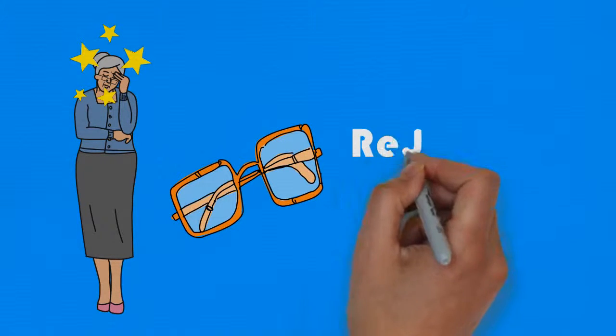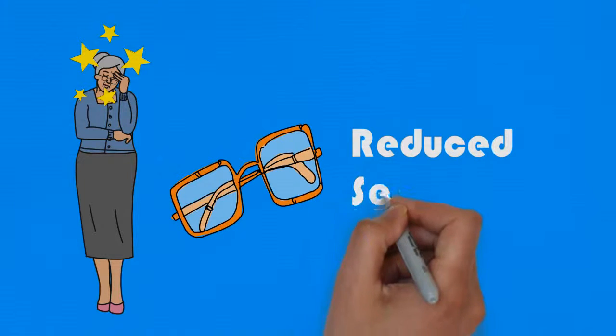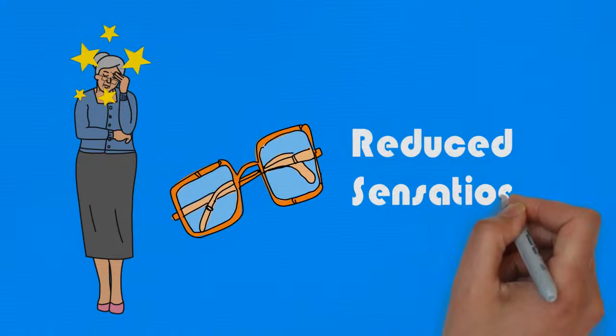So now we have a story of a lady standing up, feeling slightly dizzy, not being able to see her feet very well, not having perfect feeling in them, and so she stumbles.